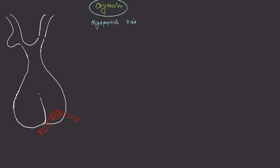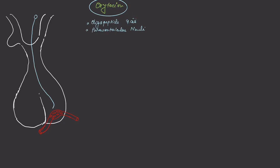Oxytocin is synthesized by the magnocellular neurons of the paraventricular nuclei of the hypothalamus, but it can also be synthesized by the supraoptic nuclei of the hypothalamus. The magnocellular neurons synthesize the oxytocin molecule, pack it in vesicles, and send it to the nerve terminals at the posterior pituitary, from which it is released and secreted into the circulation.